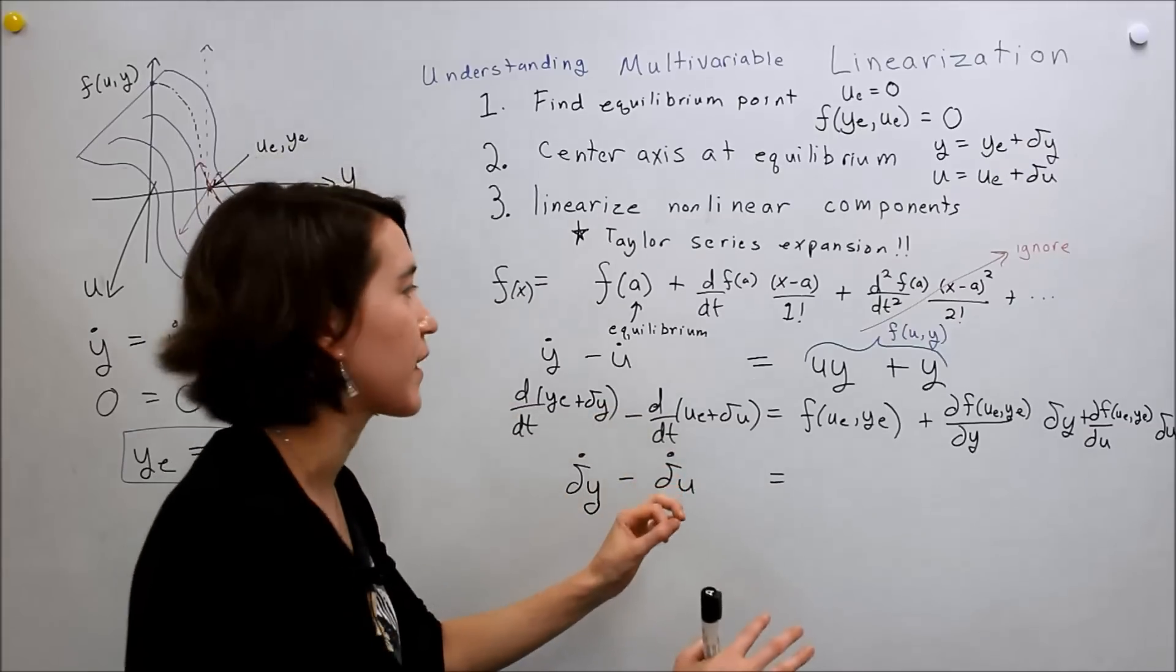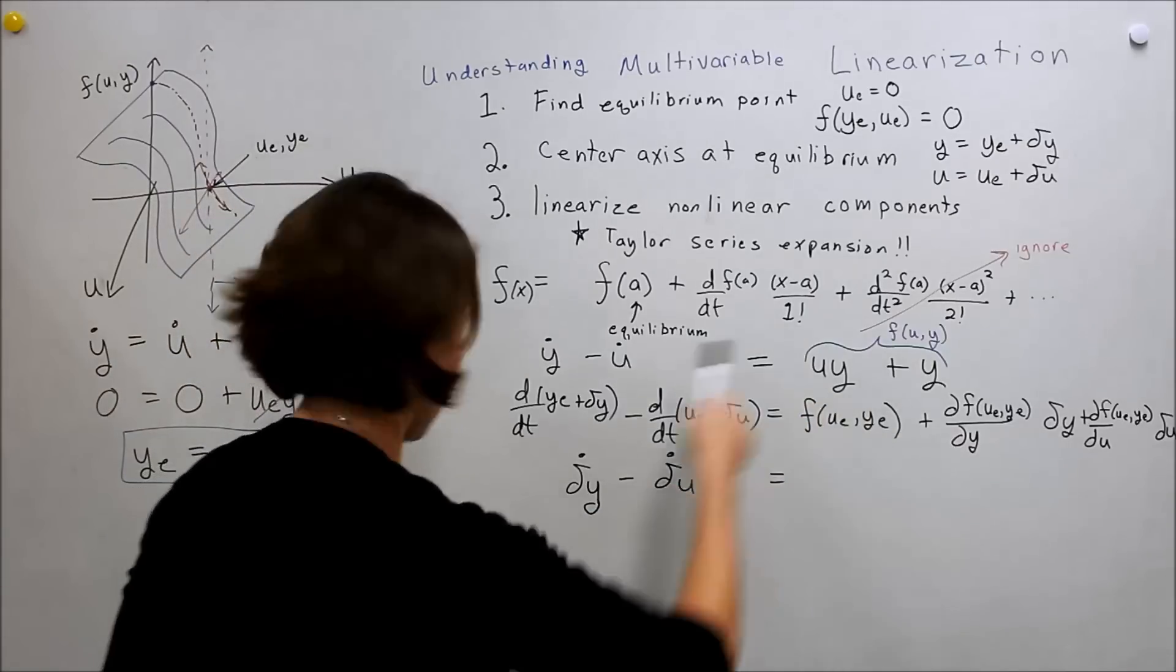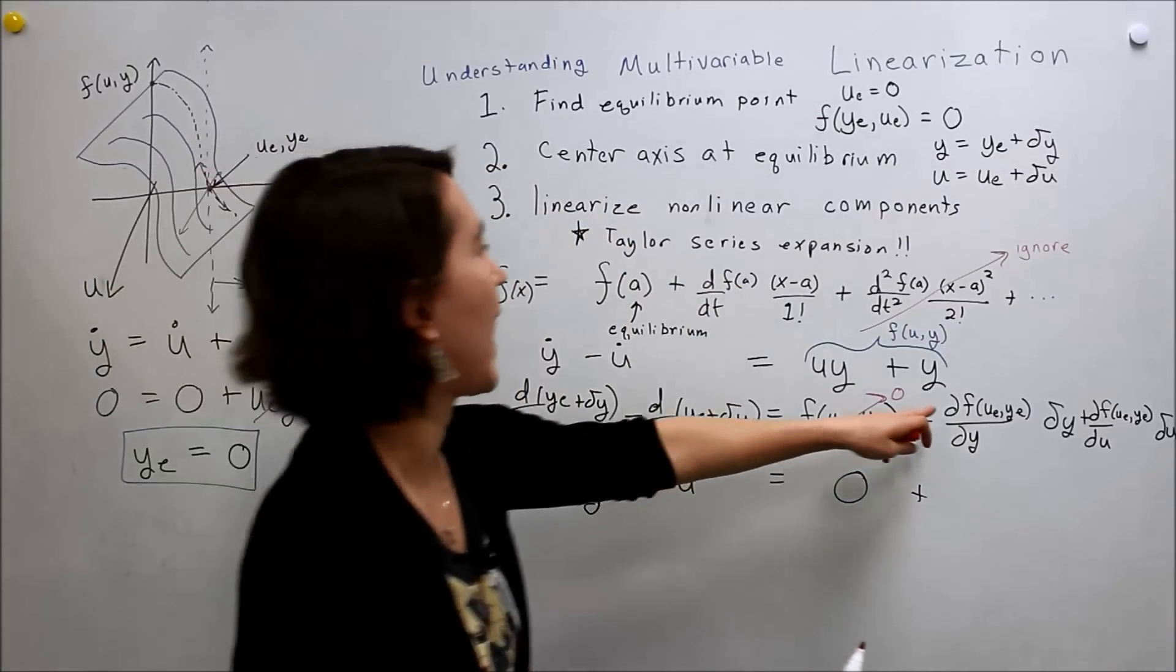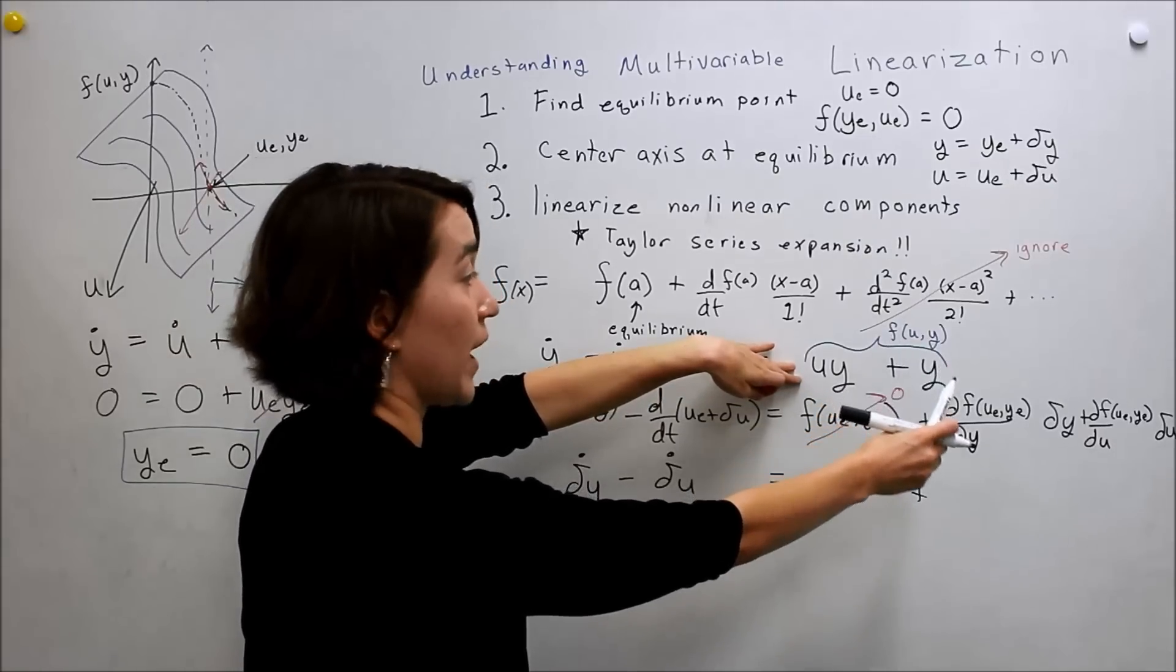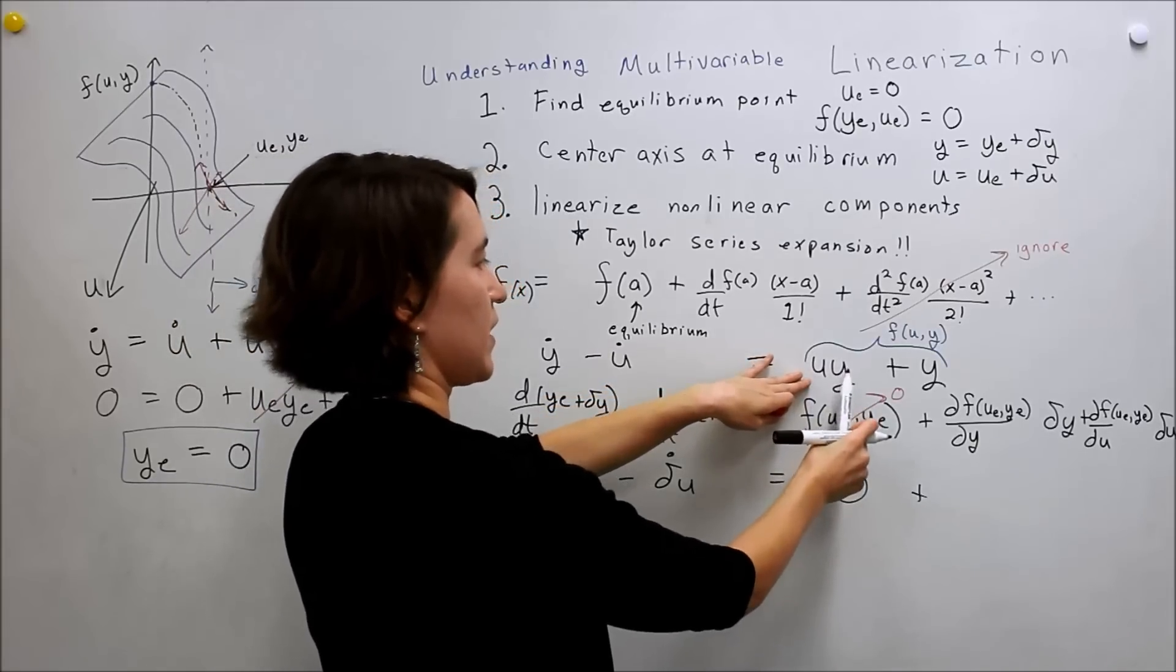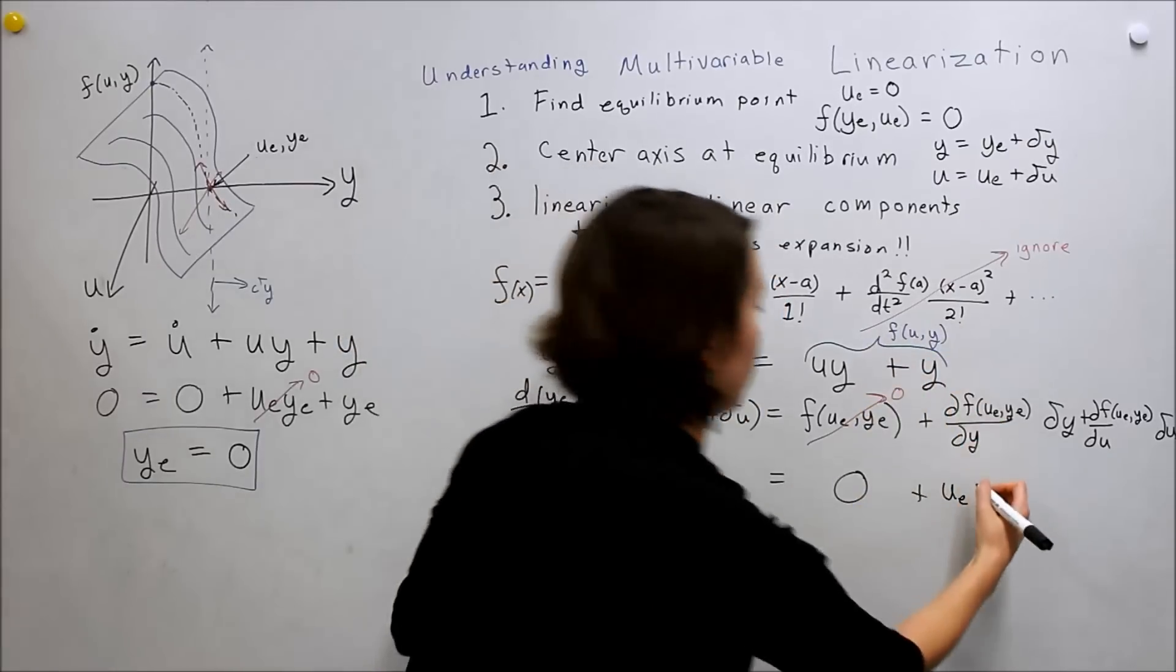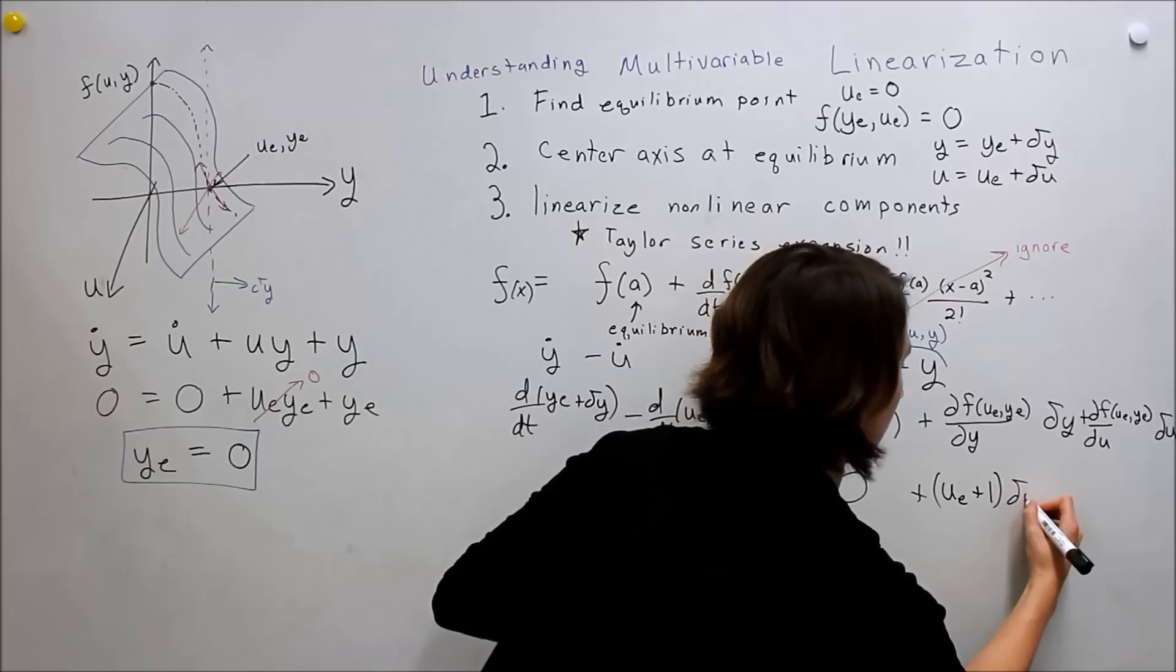Okay, so now we fill everything in. We know that we've chosen y_e to make sure that this is 0, so this will always be 0. And then, now we have to look back at our equation here, that we define as f of u, y. And then we just take the partial in terms of y. So, the partial here would be just u. And we're evaluating at u_e and y_e, so u_e. And then the partial of y here is 1. And then multiply that by delta y.